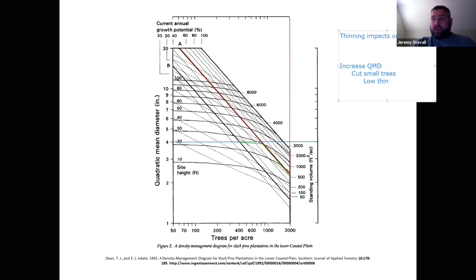Thinning can have no change on QMD. How do you do that? You cut average trees. What type of thin cuts average size trees? Cuts maybe a third of the small trees, a third of the big trees, and a third of the average size trees? That's a geometric thin, which includes corridor thinning, row thinning, mechanical thinning.